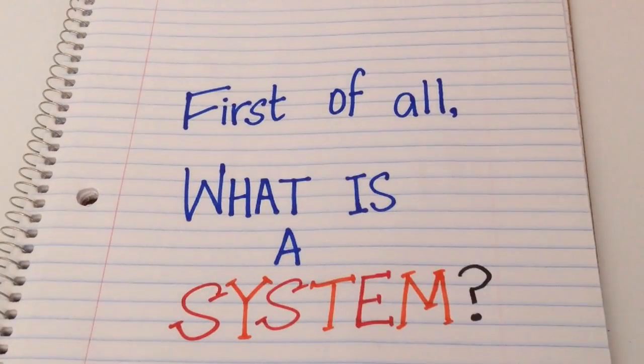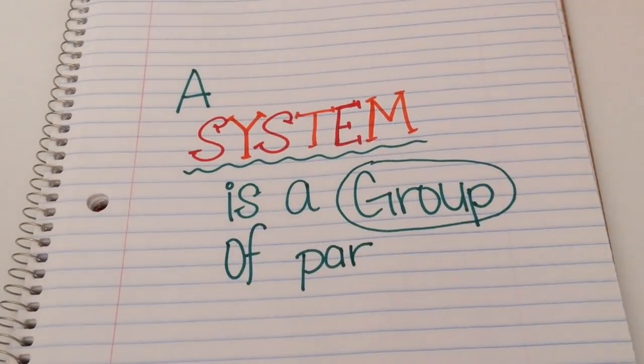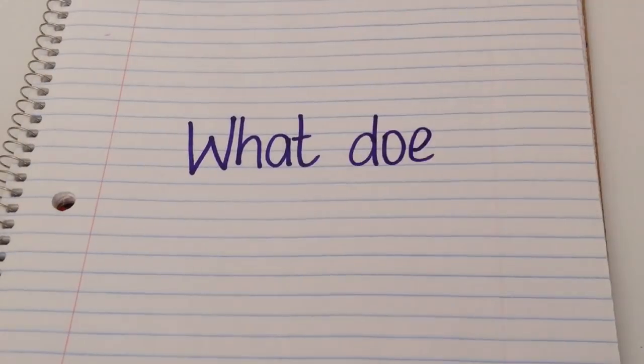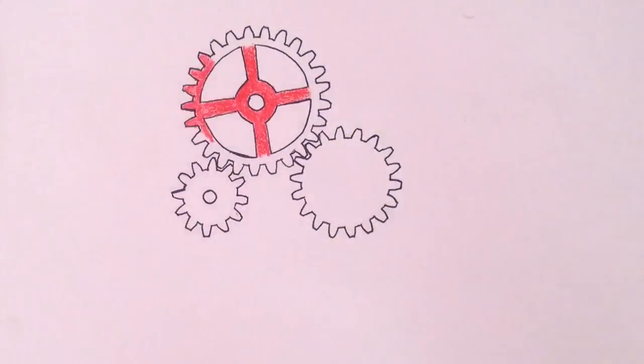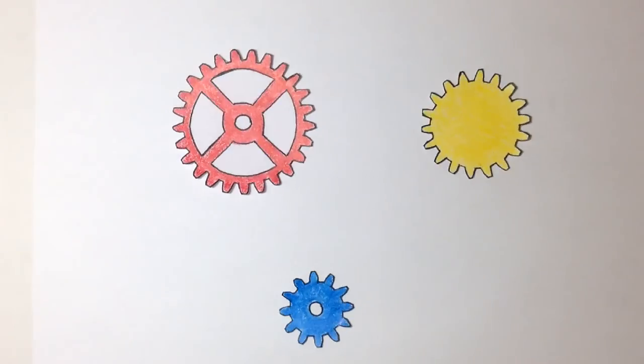First of all, what is a system? A system is a group of parts that interact. What does that mean? Think of a system as a group of gears. Each gear is its own part, but together they work to turn each other.